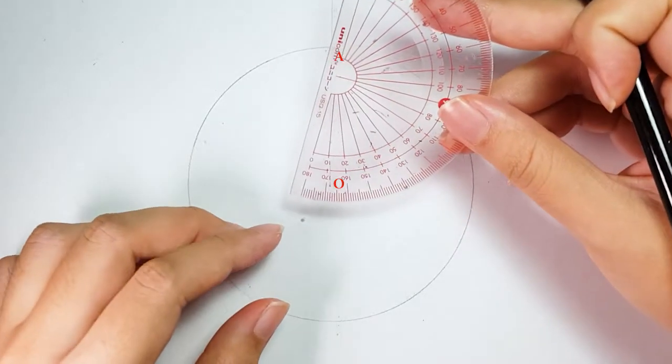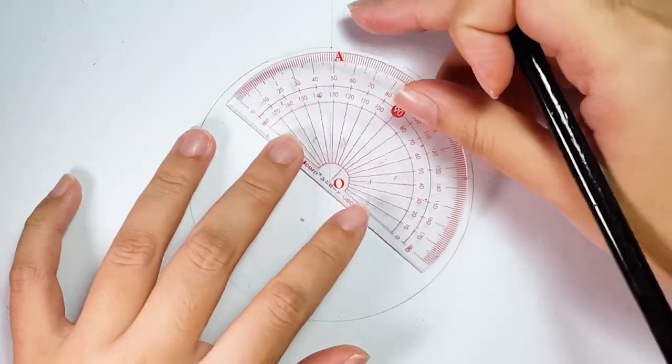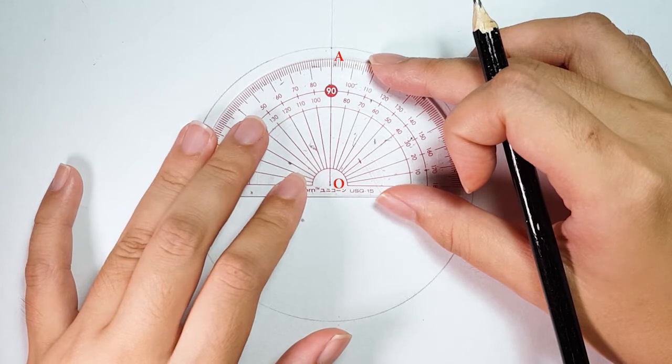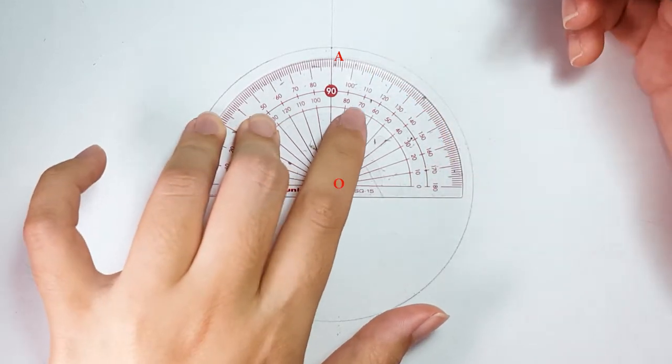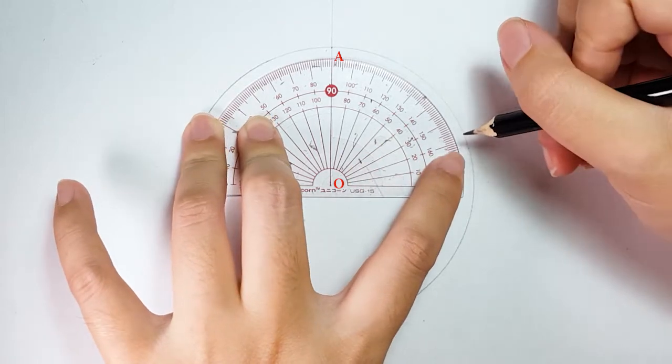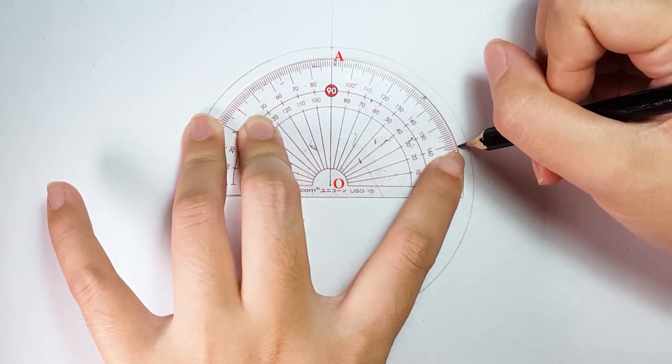Place your protractor with center point measurement at point O and measure 72 degree angle from the axis line. Once you mark the angle,